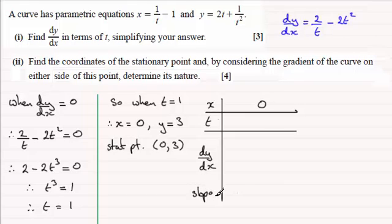And from that we should be able to determine whether it's a max or a min. So we know that when t equals 1, x is zero. We know the gradient given by dy/dx is zero. And the slope would be horizontal.